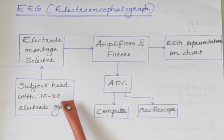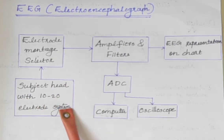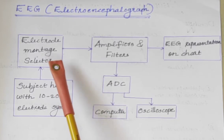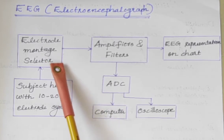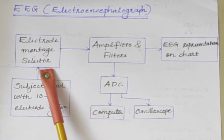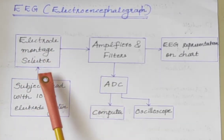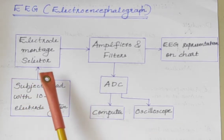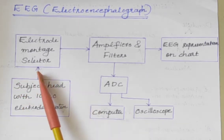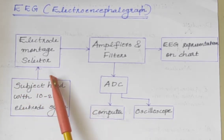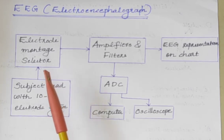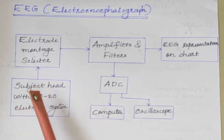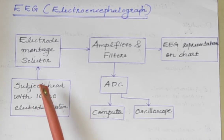Next is the electrode montage selector. EEG signals are transmitted from the electrodes to the montage selector panel. The montage selector of an EEG machine is a large frame which consists of different switches, so as to allow the user to select the desired electrode pair.